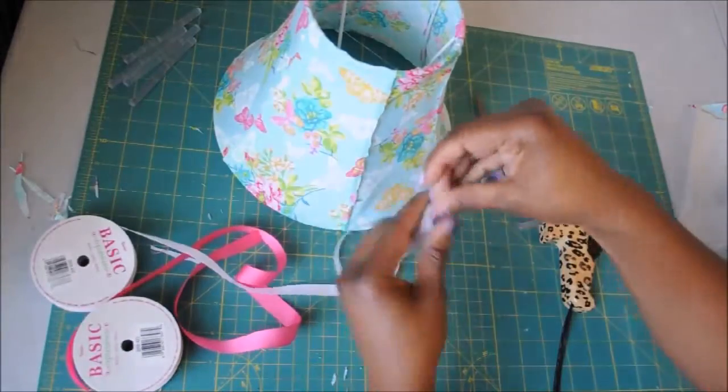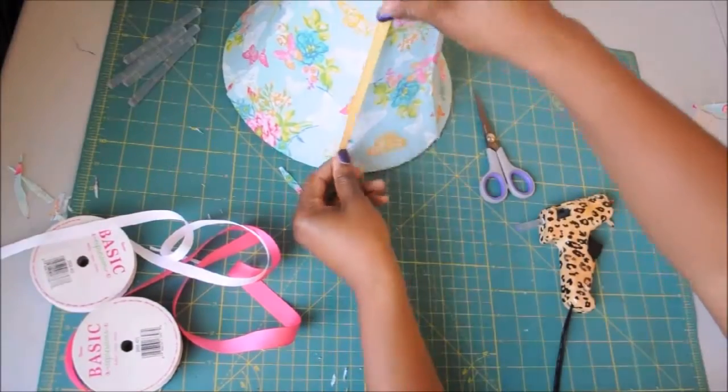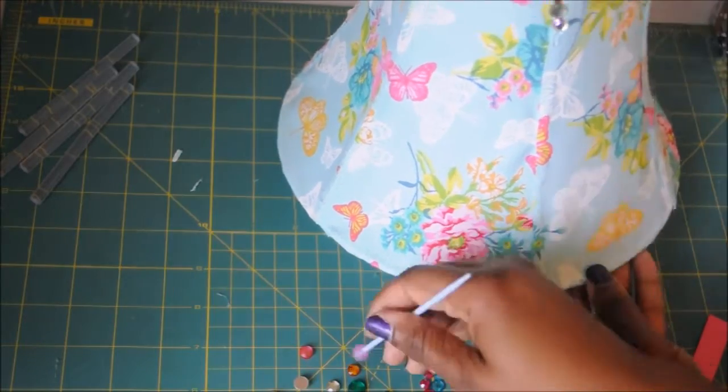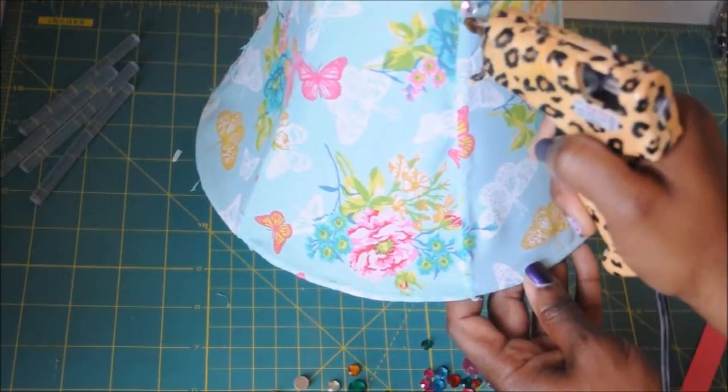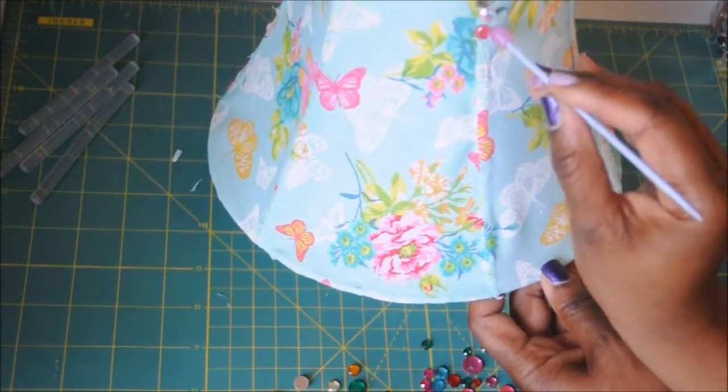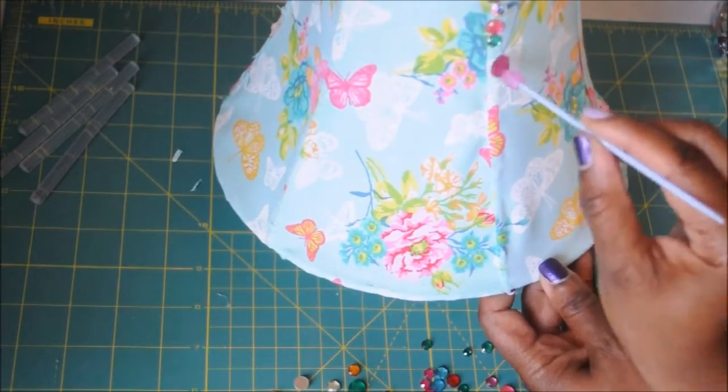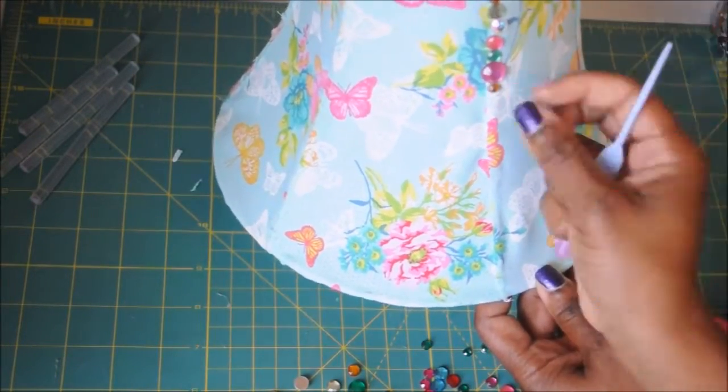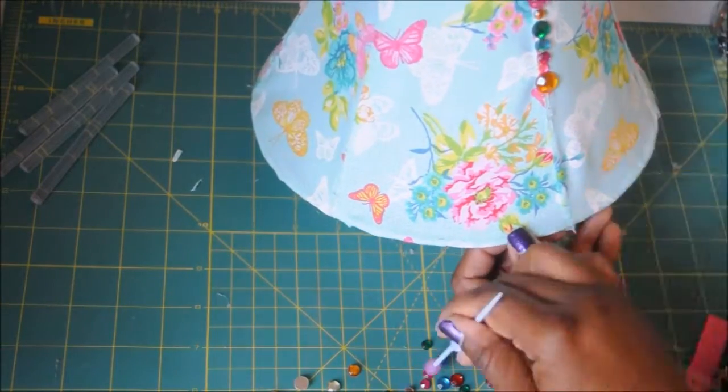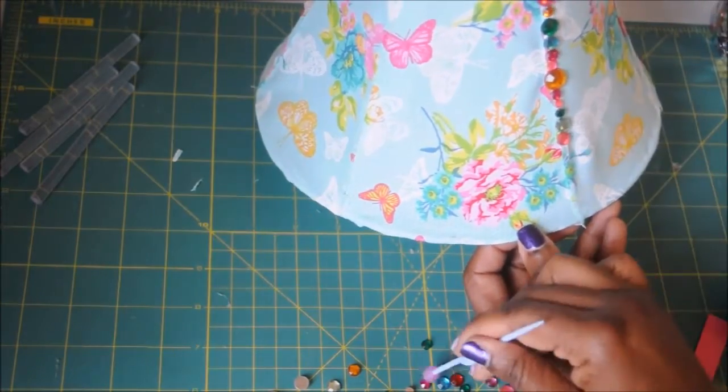And then I'm trying to decide here how I want to accent it and hide where I glued the panels on. And normally I would have used ribbon, but I didn't have a ribbon that I really liked. So I decided to use these rhinestones because I have tons of them.